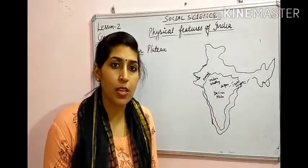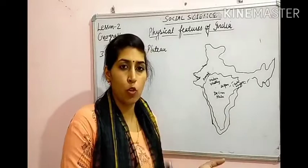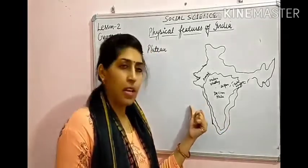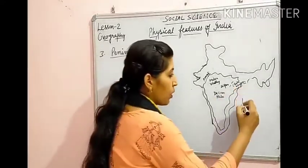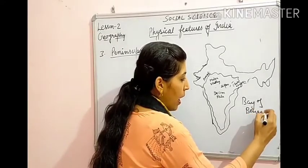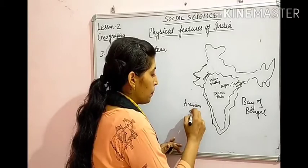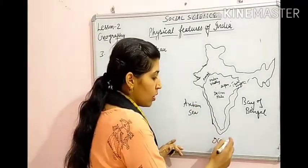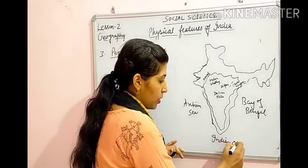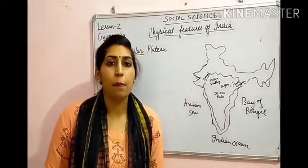Peninsula को तीन water bodies surround करती हैं: Bay of Bengal, Arabian Sea, और Indian Ocean। इसीलिए इसे Peninsular Plateau कहा गया है। Plateau क्या होता है — अपने आस-पास के area से एक table की तरह ऊपर उठा हुआ भाग, that is called the plateau। Plateau is different from a mountain — mountain की peak होती है, but plateau एक table land है।